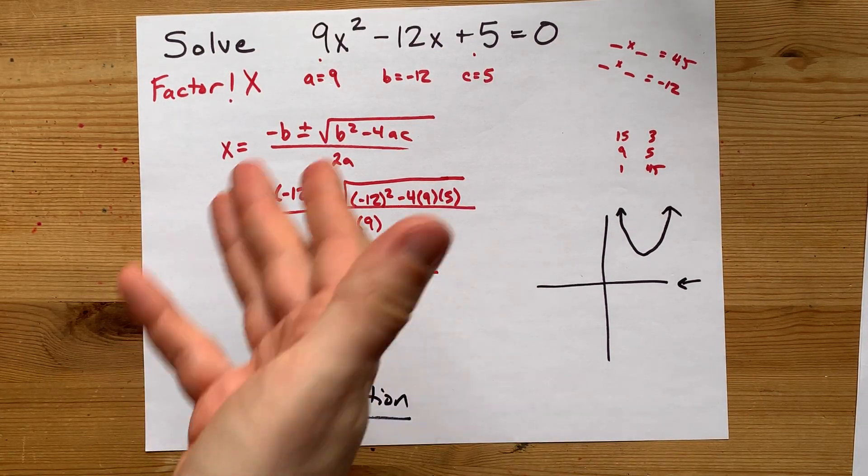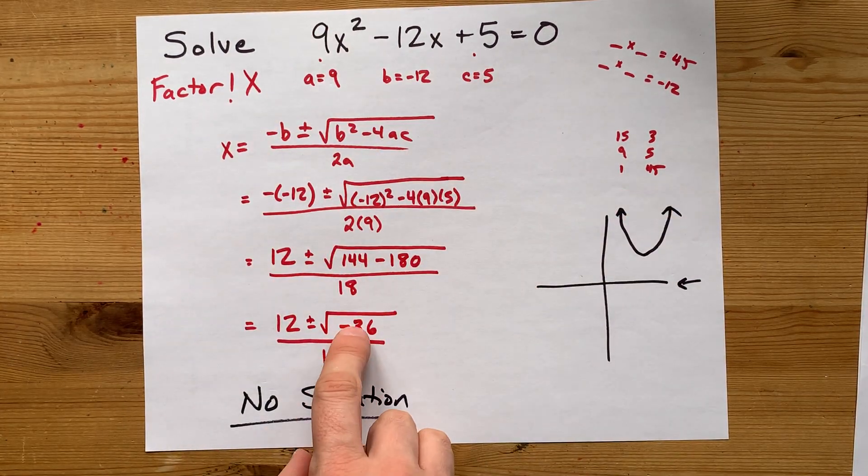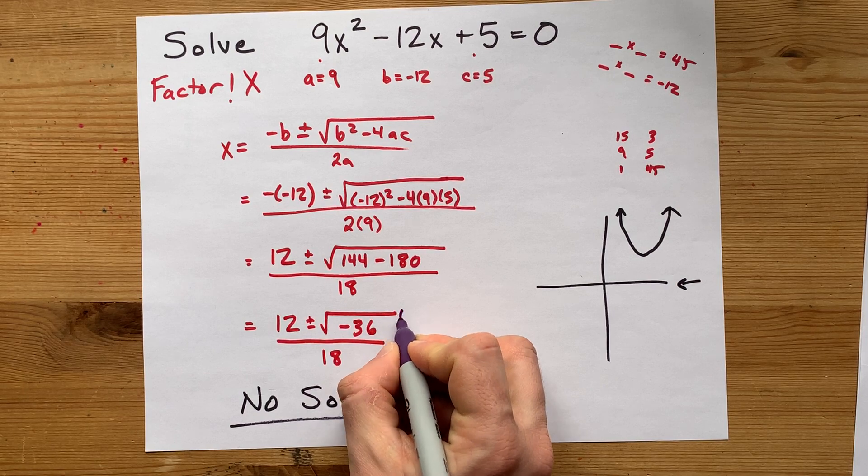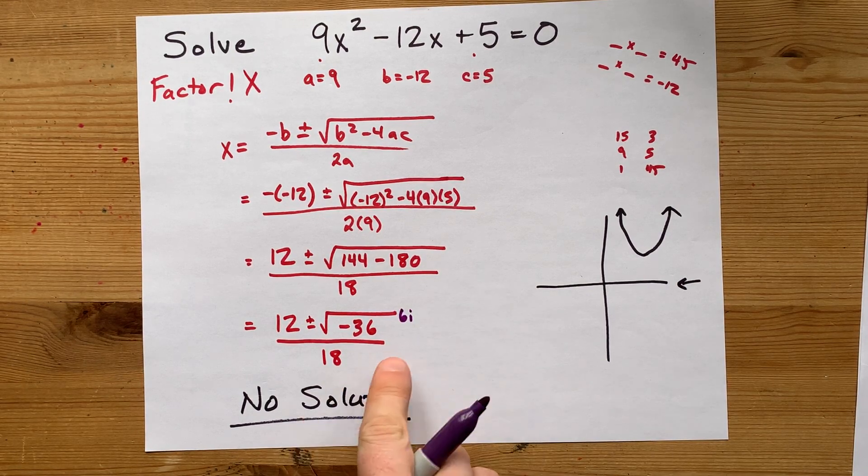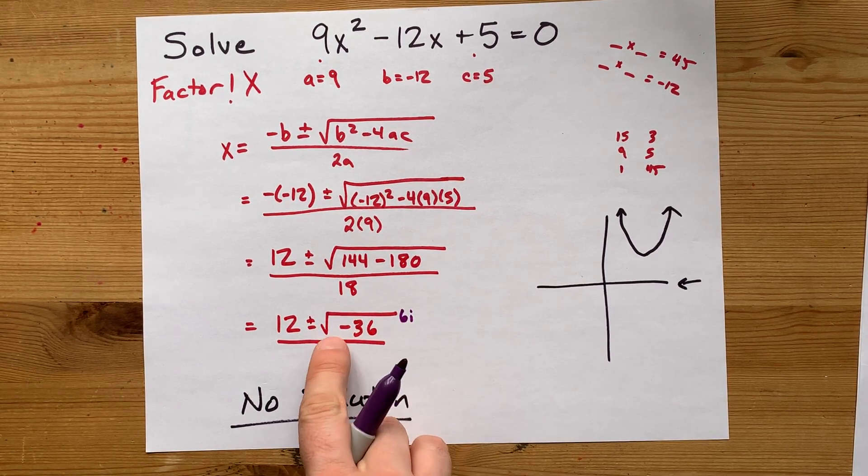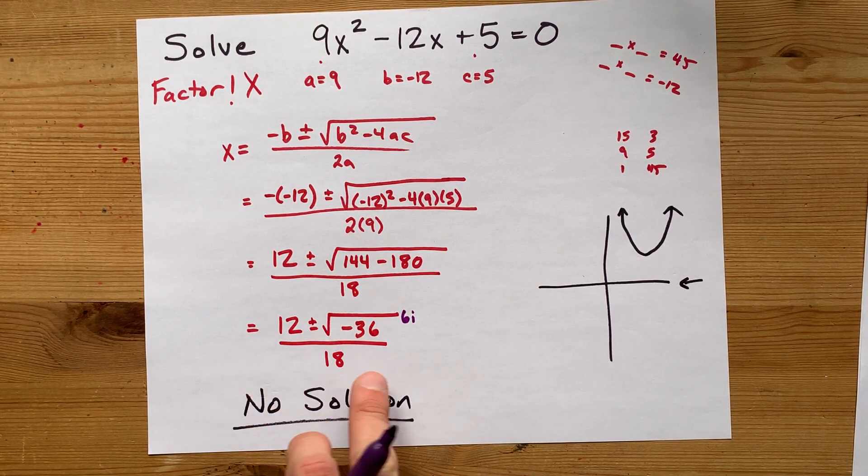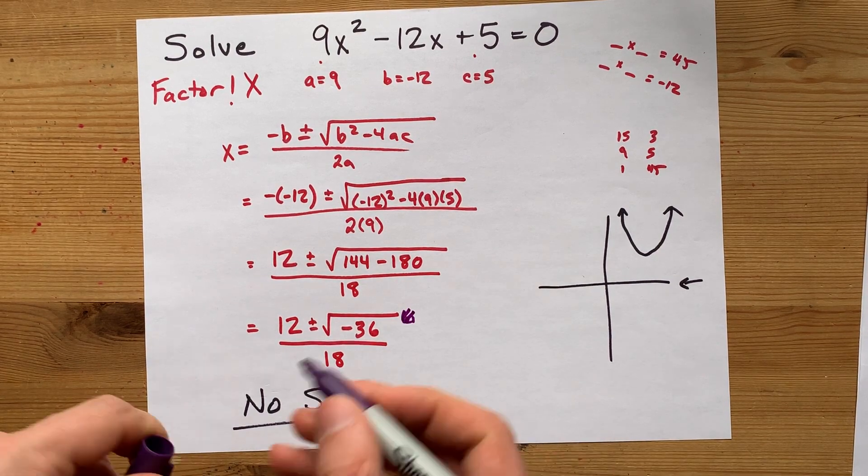If you're in university calculus, you're probably not watching this video, but you actually can take the square root of that. You end up with something called 6i. The square root of 36 is the 6, and then the square root of this negative is this i, which means it's an imaginary number. Then you could reduce the fraction, but let's not go there.